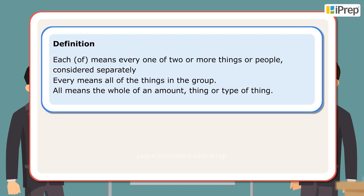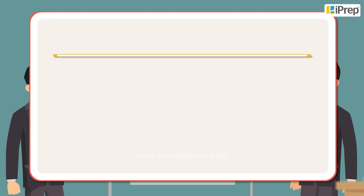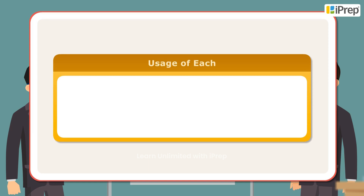Definition: 'Each' means everyone — one of two or more things or people considered separately. 'Every' means all of the things in the group. 'All' means the whole of an amount, thing, or type of thing.